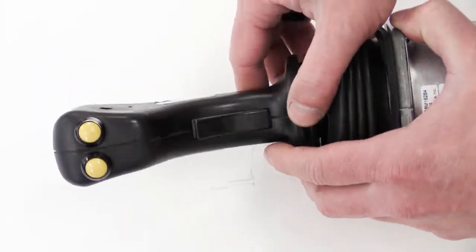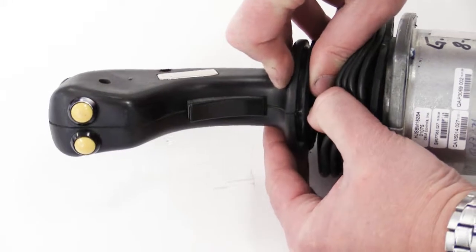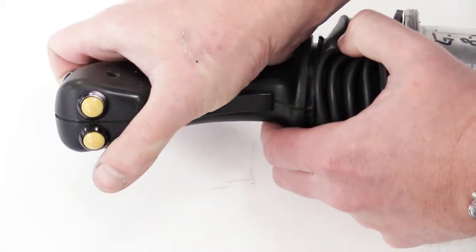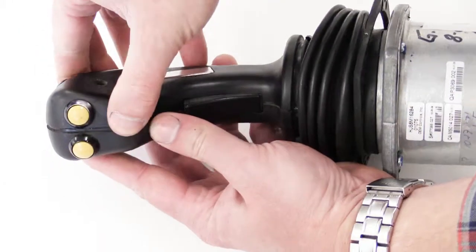At this point, you can separate the joystick handle housing. Exercise caution when doing this as the dead man lever is spring loaded.